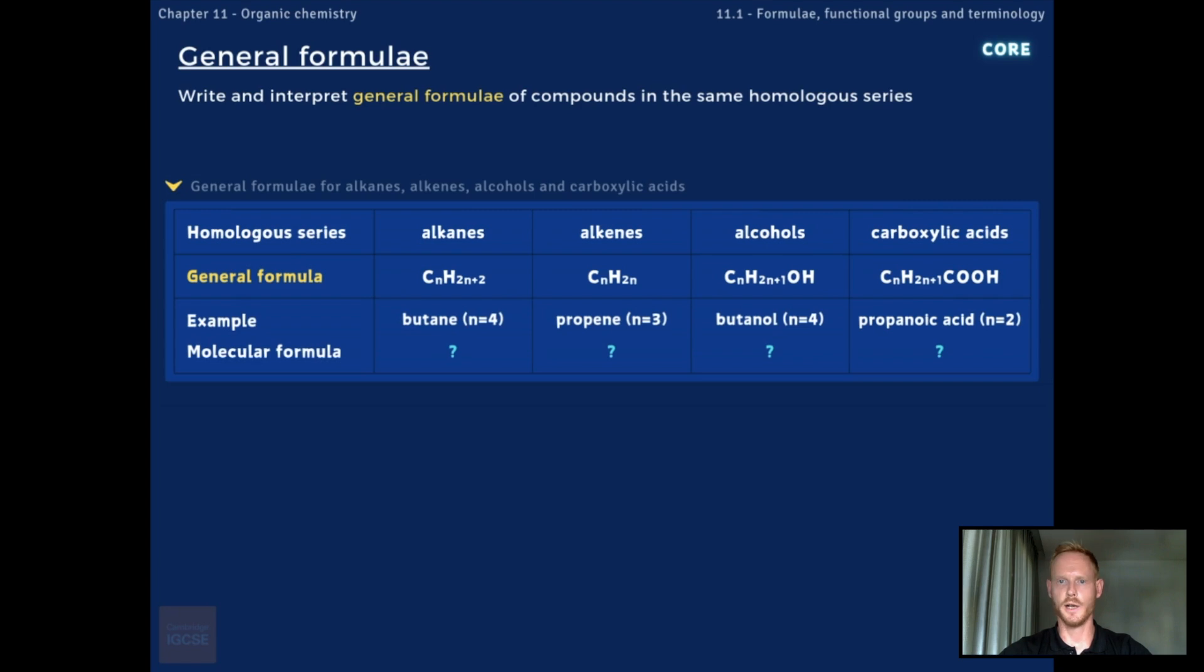Now general formulae can be used to work out the molecular formula of a compound if the number of carbon atoms present in the compound are known. For example, butane is an alkane with four carbon atoms and two times four plus two hydrogen atoms. So the molecular formula of butane is C4H10.